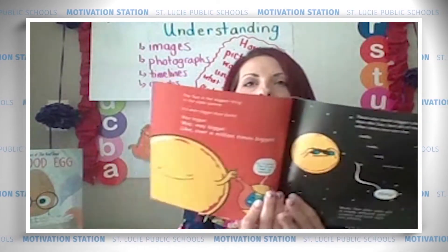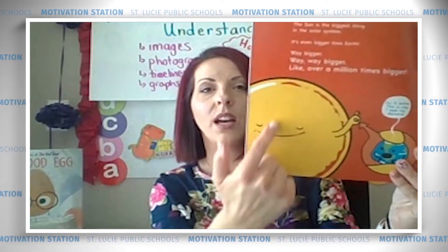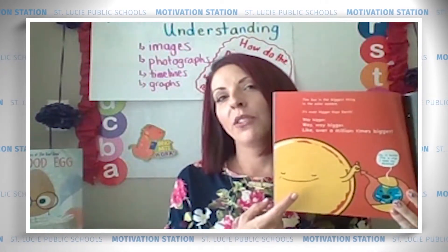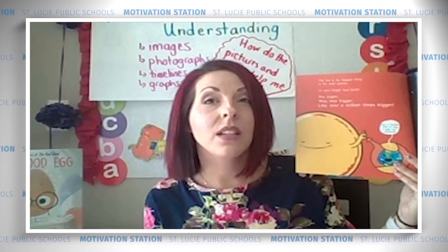Here in our text I have a picture we're going to look at first. If you notice, this picture of the Sun is very large and it is showing that he is holding something in his two fingers. Now we all know the Sun doesn't have arms, but in nonfiction texts the author may choose to use illustrations to help readers understand a nonfiction topic. Let's listen to the words on the page: 'The Sun is the biggest thing in the solar system. It is even bigger than Earth. Way bigger. Way way bigger. Like over a million times bigger.'